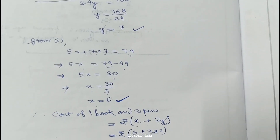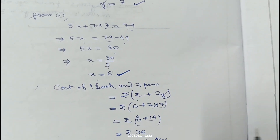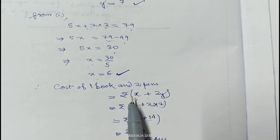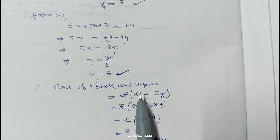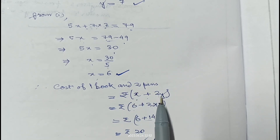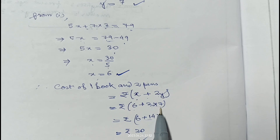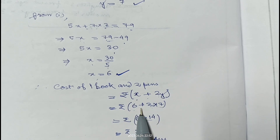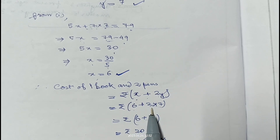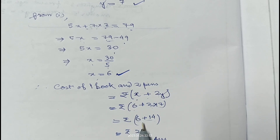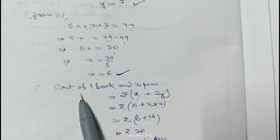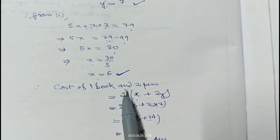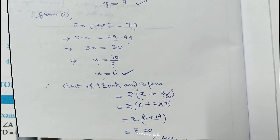Now we find the cost of 1 book and 2 pens. Cost of 1 book is x and cost of 2 pens is 2y. Here x is 6 and y is 7, so it will be 6 plus 2 into 7, which is 6 plus 14, giving Rs. 20. Therefore cost of 1 book and 2 pens is Rs. 20. And there is the answer.